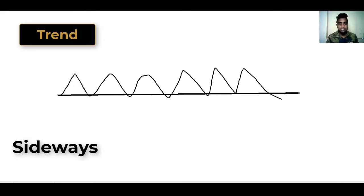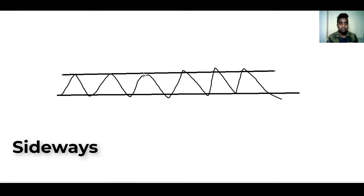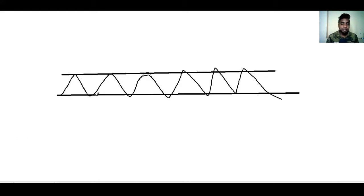If you also notice, there is another point on the top. The price has been hitting this high and then creating a low, happening consistently. If you connect this using a horizontal line, almost all the points are touching it. The price has been hitting the support level and bouncing back to hit the resistance level. When I say support and resistance, it's not only horizontal lines — you can also use diagonal lines to make support and resistance.